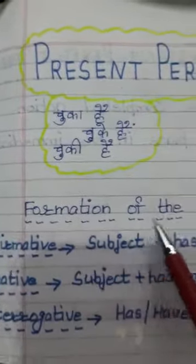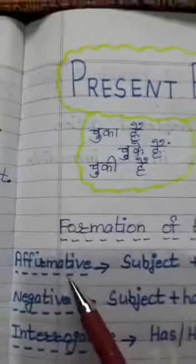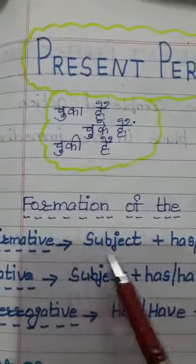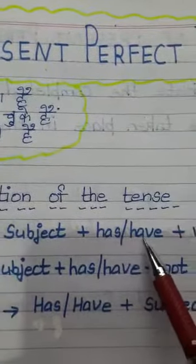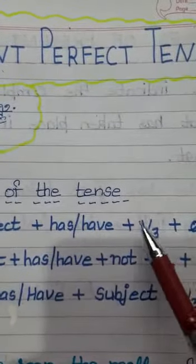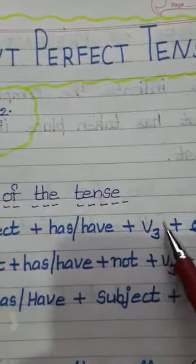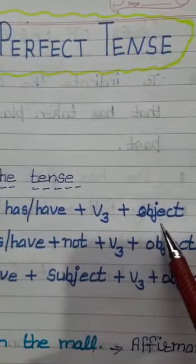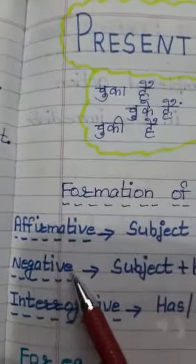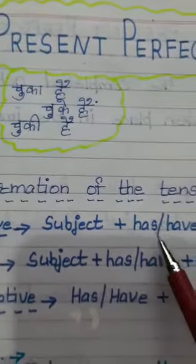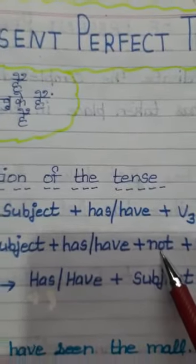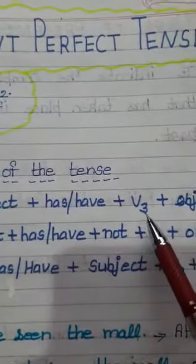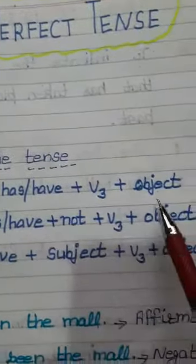Now let us go through the formation of this tense. In order to make an affirmative, or simple sentence, we use: subject + has/have + third form of the verb + object. In perfect tenses we always go with the third form of the verb. For negatives: subject + has/have + not + third form of the verb + object.